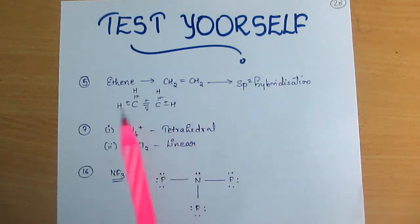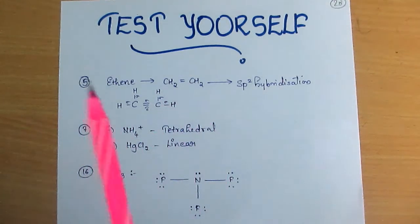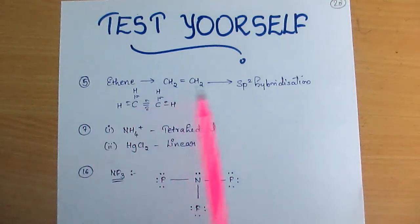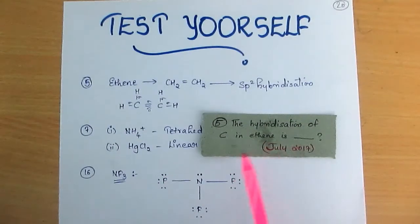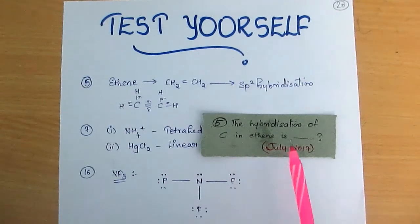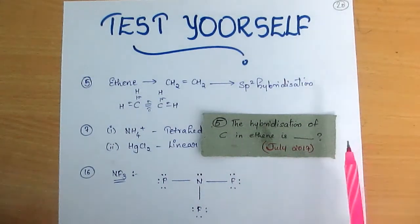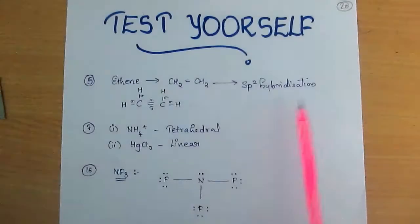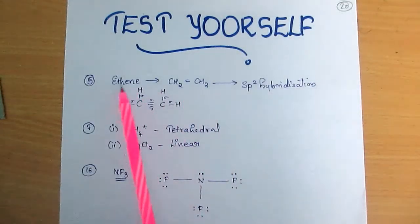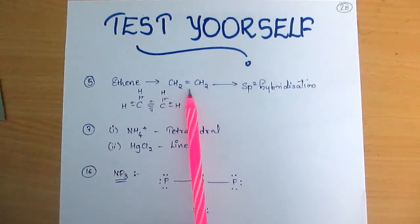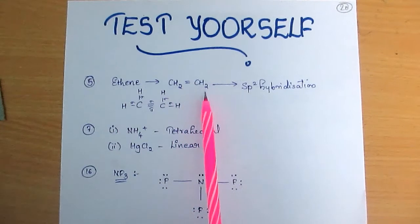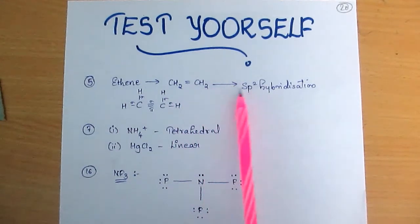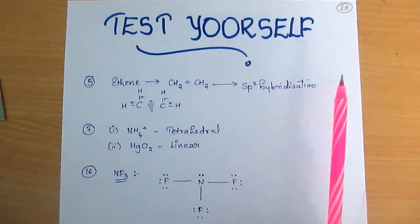The first question is the fifth question. The hybridization of carbon in ethyne — this was asked in July 2017. The answer is sp2 hybridization. Ethene is CH2 double-bond CH2, and that is sp2 hybridization.